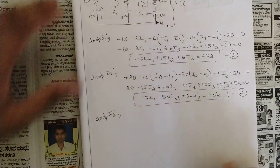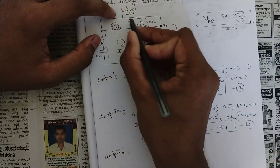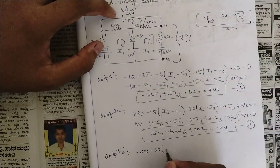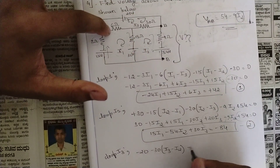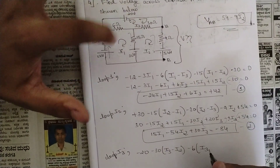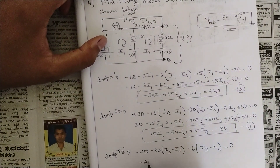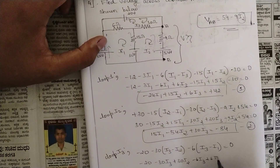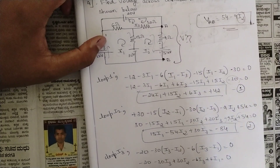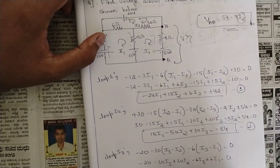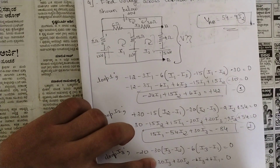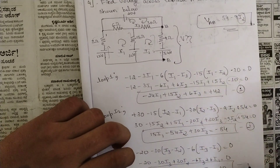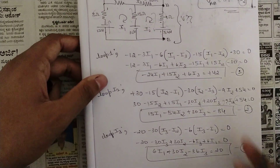Applying KVL to loop i3: −20, then −30·(i3 − i2), then −6·(i3 − i1) = 0. Grouping: 6·i1 + 30·i2 − 36·i3 = 20. This is equation 3. We now have three equations to solve for i1, i2, and i3.